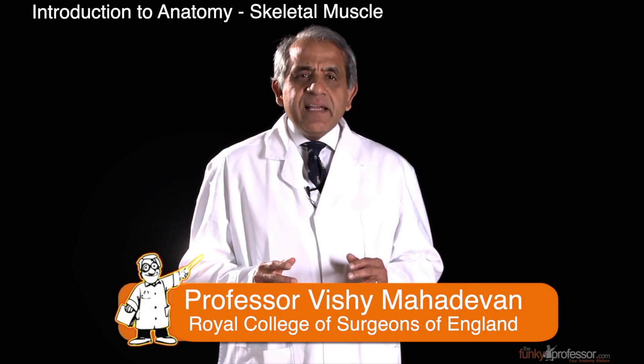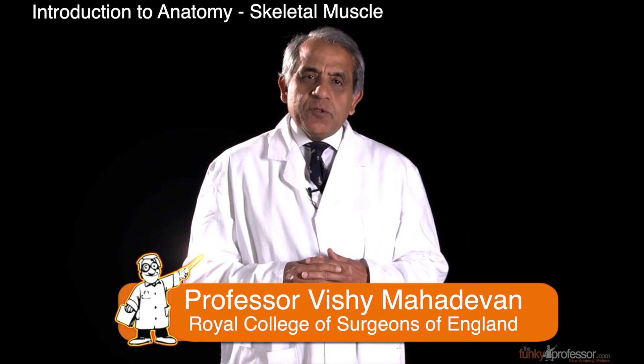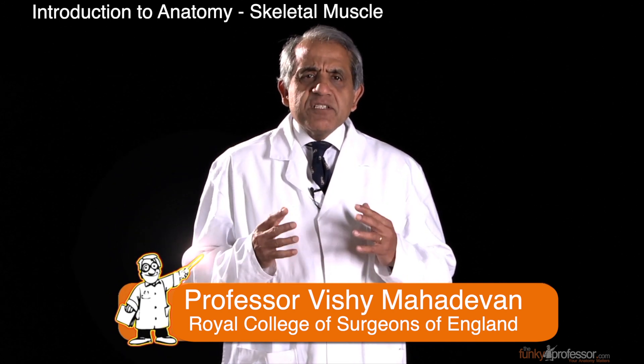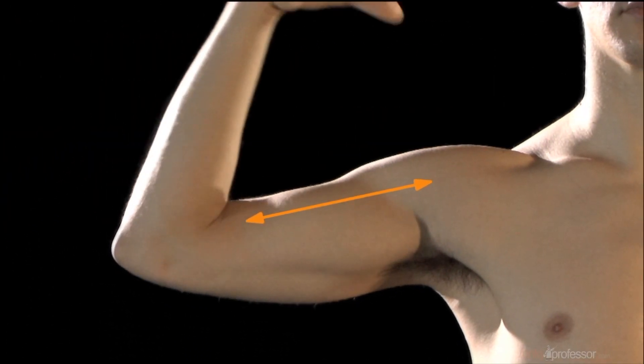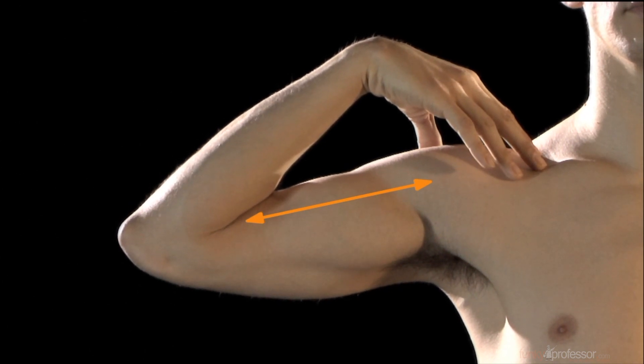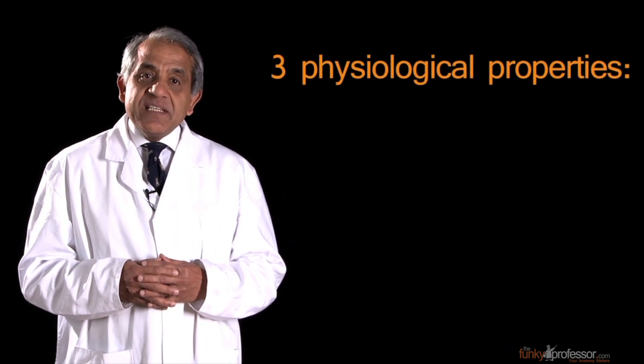Muscle is a highly specialized form of tissue and possesses the basic physiological property of contractility, which is to say an ability to contract and shorten. In addition, all muscles possess three important physiological properties.